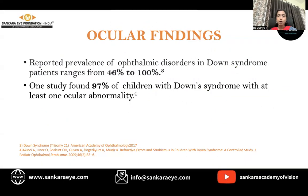The ocular findings in children with Down syndrome ranges from about 46% to 100%. One study found that nearly 97% of the children with Down syndrome have at least one ocular abnormality.